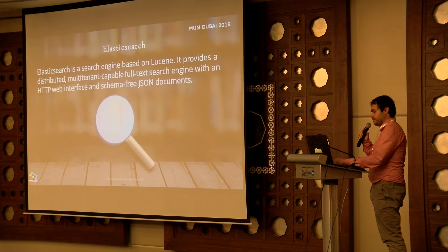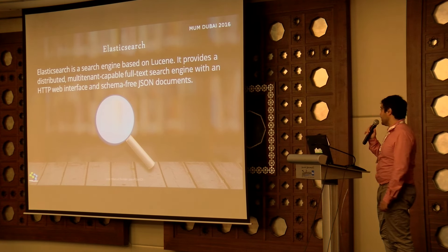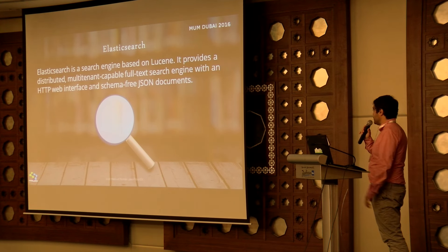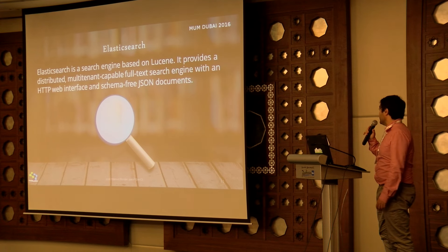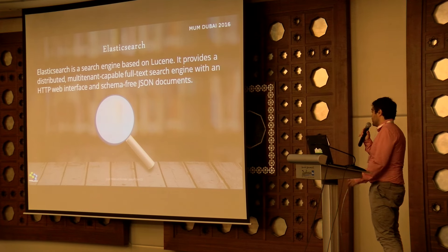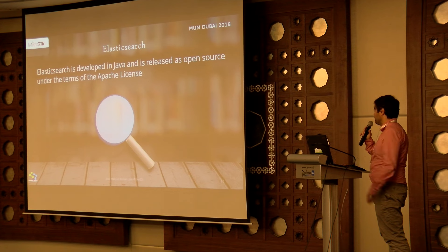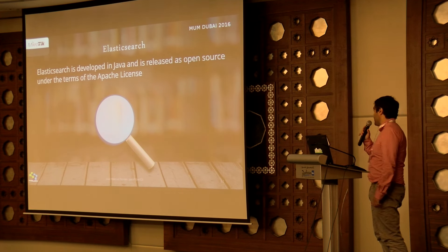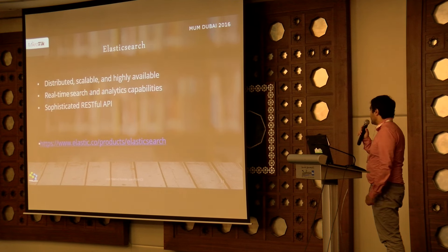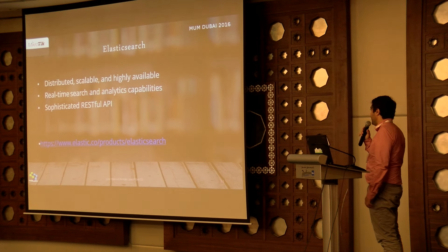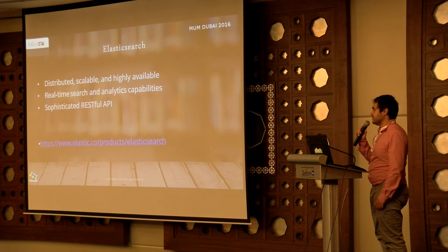What is ELK? ELK is an acronym for Elasticsearch, Logstash, and Kibana. The first of these three systems is Elasticsearch. It's a search engine based on Lucene. It provides a real-time search engine with output as JSON documents. It's programmed in Java and it's open source with an Apache license. Its characteristics are: distributed, scalable, and highly available.